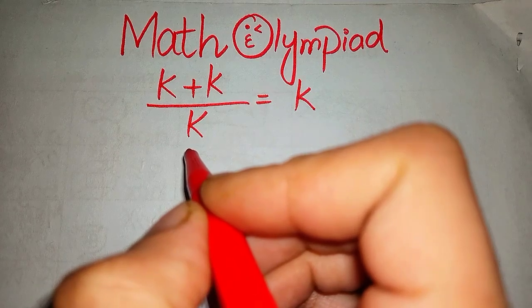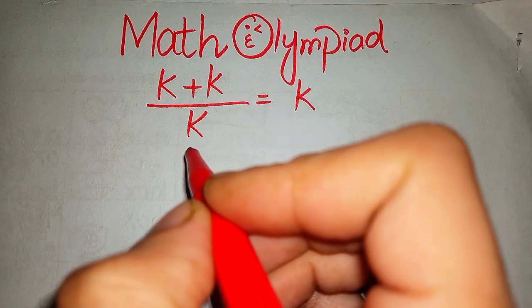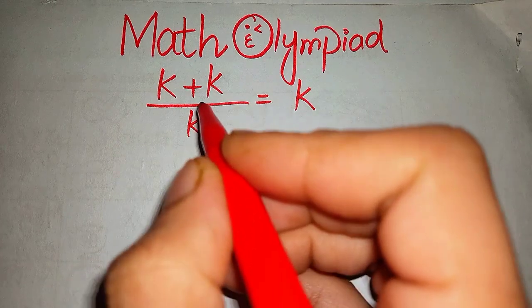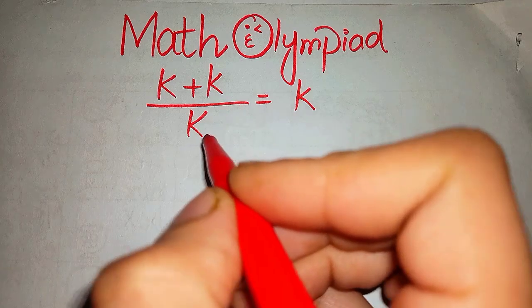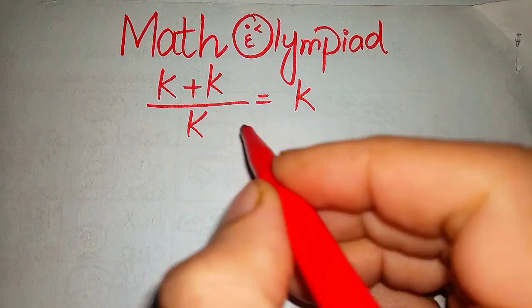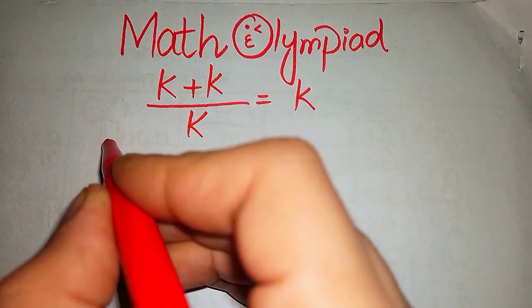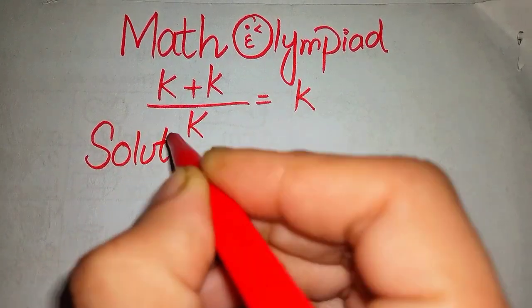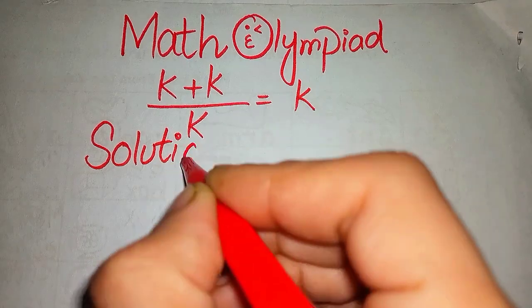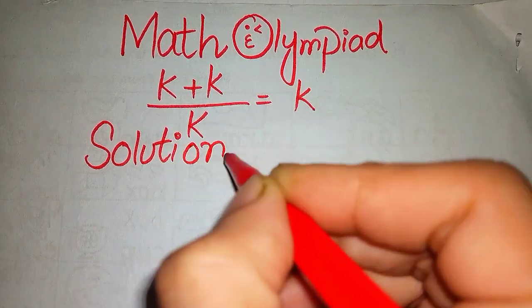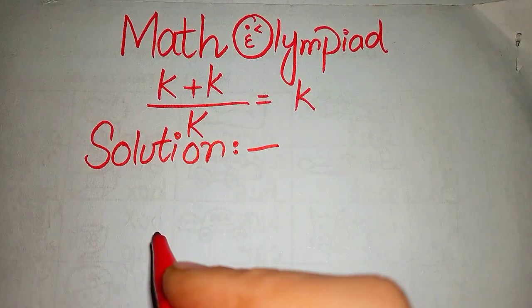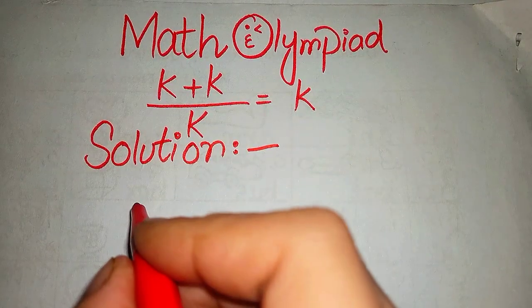Hey guys, welcome to my channel. We'll be solving this nice math olympiad algebra equation: k plus k over k equals k. Let's start our solution, and here we could apply two methods to solve this equation.